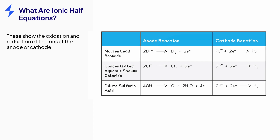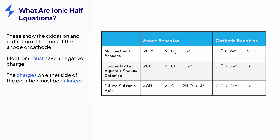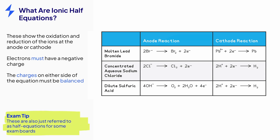Some of these examples are shown here. As with any other symbol equation, the number of atoms or ions for each element should be balanced, but in addition you must make sure that the electrons have a negative charge and that the charges of the ions and the electrons are balanced. Depending on which exam board you do, ionic half equations may be referred to as just half equations.